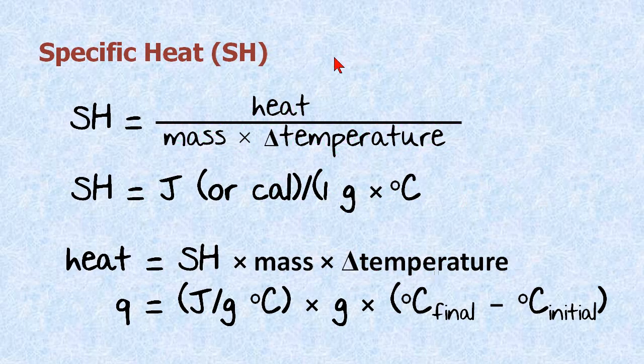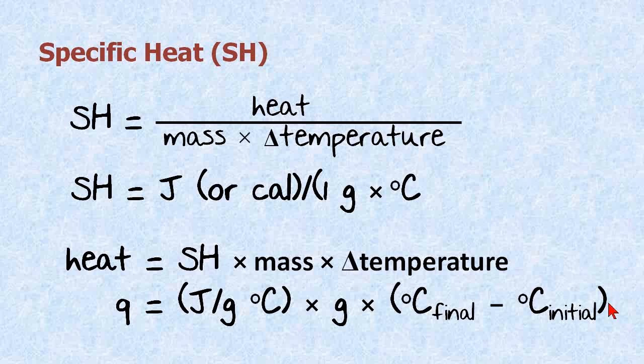Let's review specific heat and what we can do with this equation, which is important. Here's specific heat. It's heat, which is Q divided by mass, which is in grams, and the change. This little delta symbol here is change in temperature.